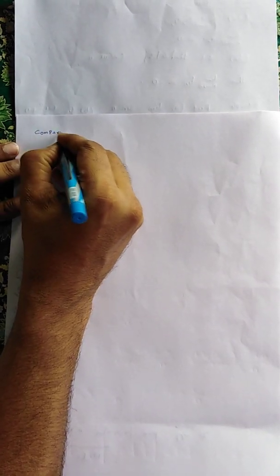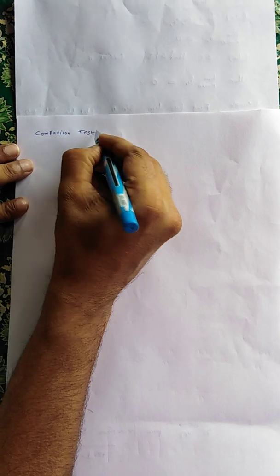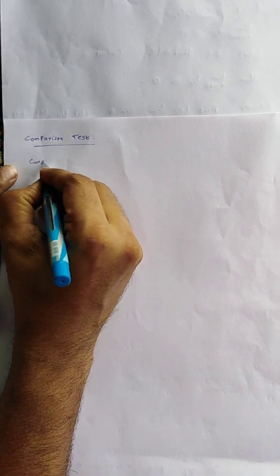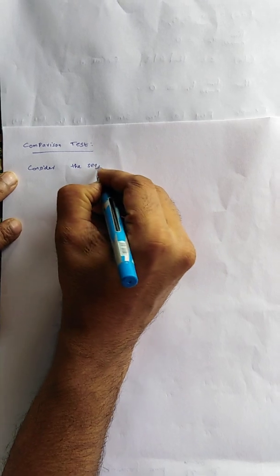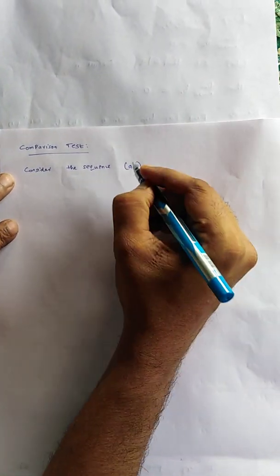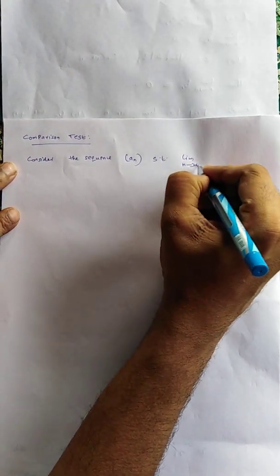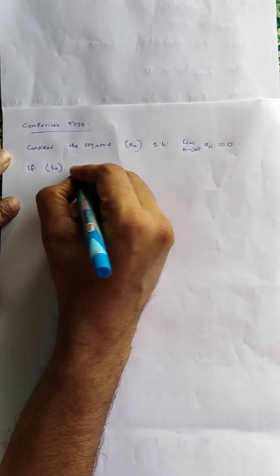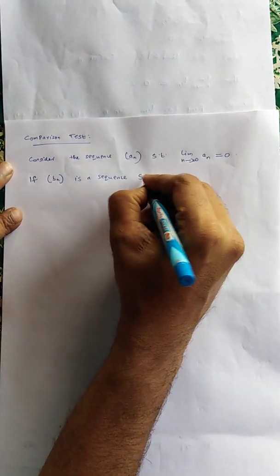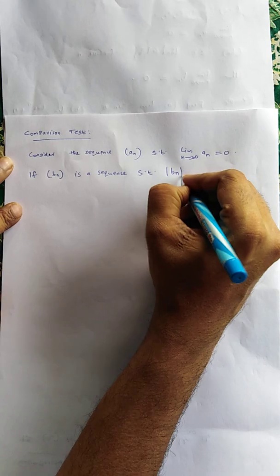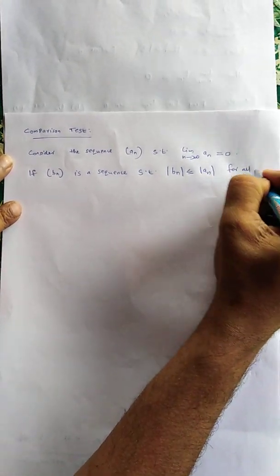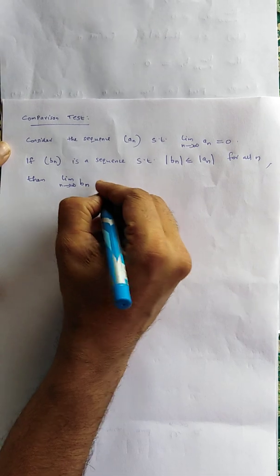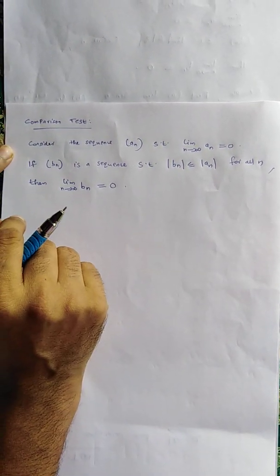Next we study the comparison test. We consider the sequence a_n such that lim(n→∞) a_n = 0. If sequence b_n is a sequence such that |b_n| ≤ |a_n| for all n, then lim(n→∞) b_n is also equal to 0.